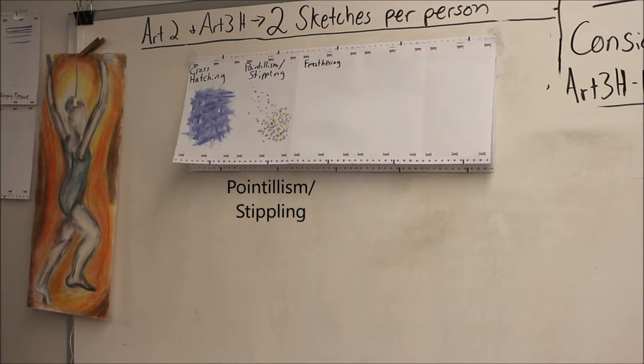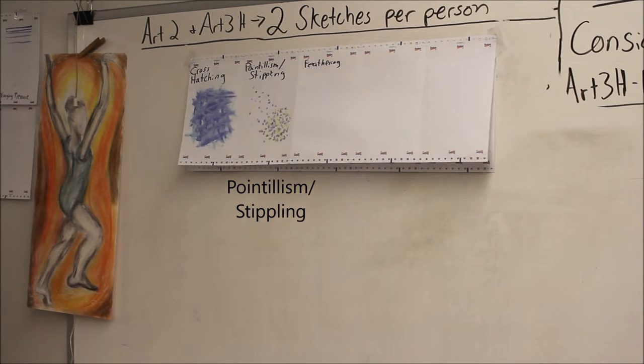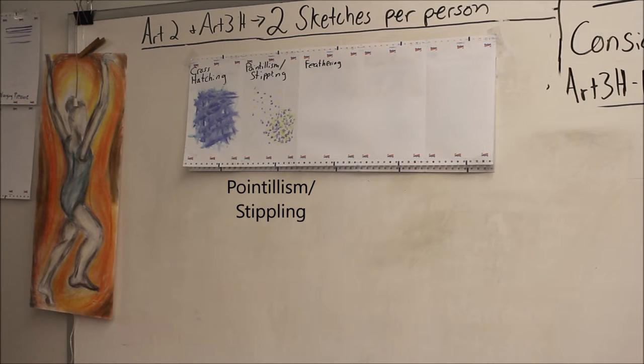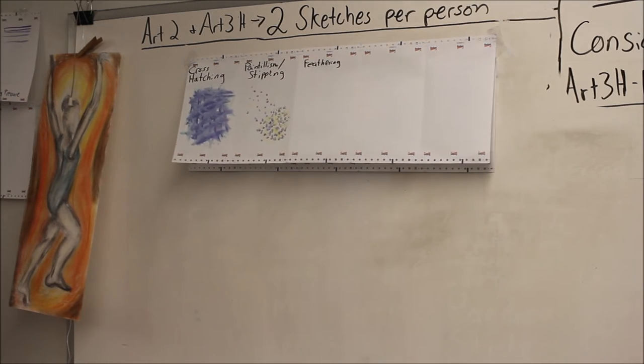Have you guys ever done that vision test where you've got like the circles and the dots and then in the middle you've got to like find the hidden letter or word or whatever it is? It's the same concept. Okay. Your brain wants to blend it all together, but you've got to work a little bit harder to separate the colors back out.